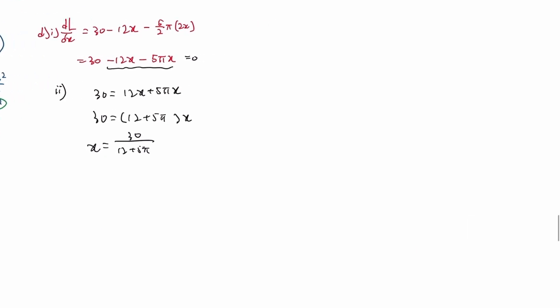Justify it is a maximum. So I guess I'll use the second derivative. If you differentiate this again, differentiate 30 is gone, differentiate negative 12x is negative 12, differentiate negative 5πx is minus 5π. Again π is just a number.